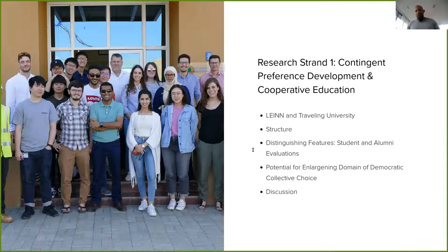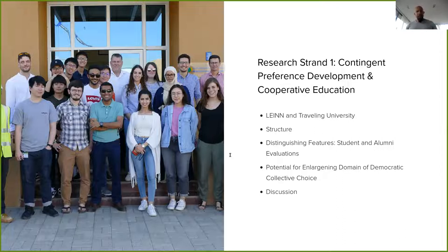Regarding the potential for enlarging the domain of democratic collective choice, as expressed by both teampreneurs and team coaches, there is significant attrition in the program. One alumnus, Miguel, described this as stemming from people assuming delivery of entrepreneurship and from a failure to act during the business phase — the final year dedicated to developing a startup. Miguel is also convinced that the average age of first-year inductees, typically 18 to 21, means many are not mentally mature, while mental maturity is important for the degree.